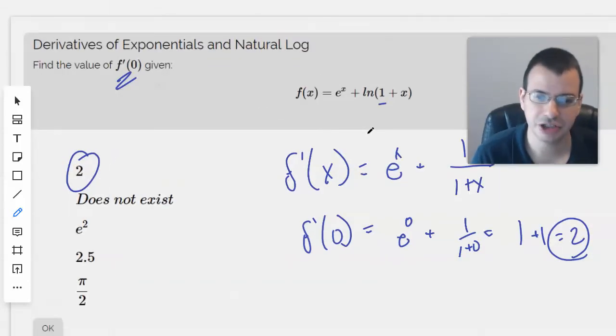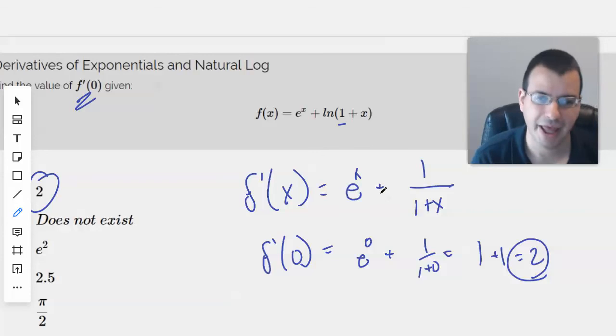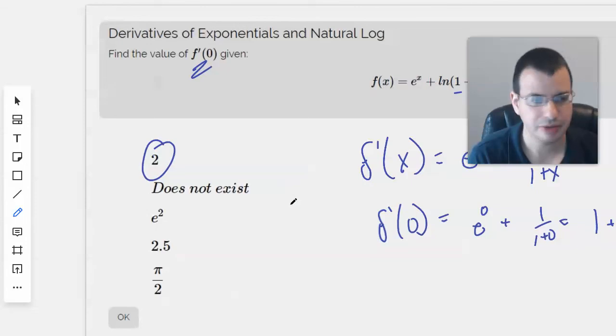So the key here is just knowing that the derivative of e^x is e^x, and the derivative of ln(x) is 1/x. And not getting caught up doing something you're not supposed to. So not too bad. Excellent.